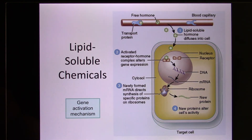So the lipid-soluble chemical pathway usually results in new protein synthesis. Compared with the G protein-coupled receptor pathway, which usually activates existing proteins inside the cell.